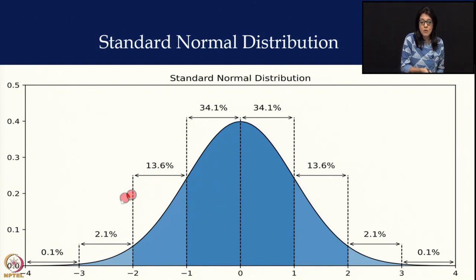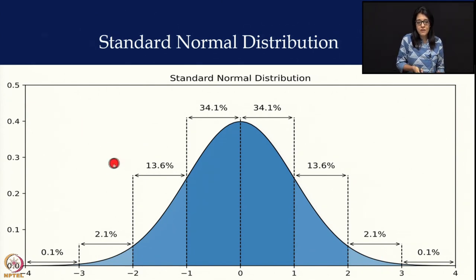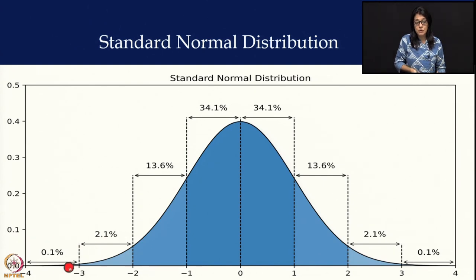Once children start falling below minus 2 standard deviation, they are counted as undernourished — moderately malnourished or severely malnourished. Moderately malnourished are children between minus 2 and minus 3 standard deviation. Children falling below minus 3 standard deviation are severely malnourished. These children need immediate intervention to bring them up at least towards the mean.